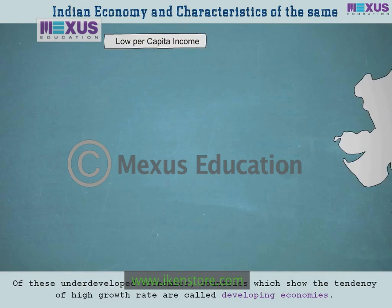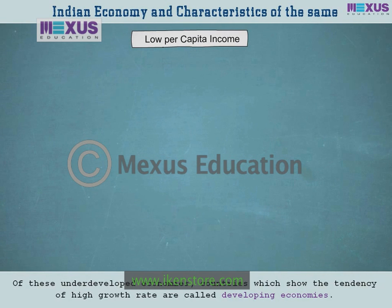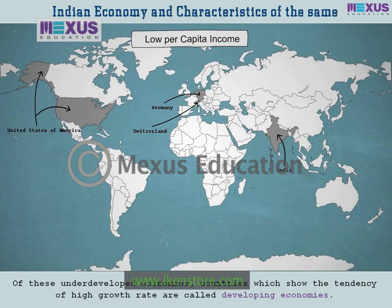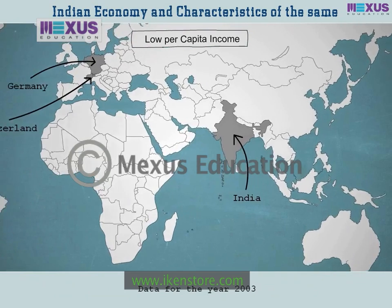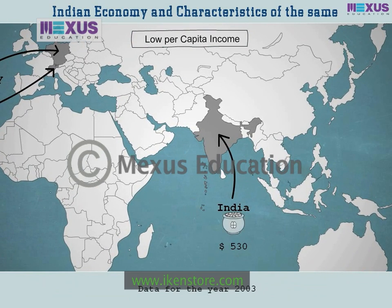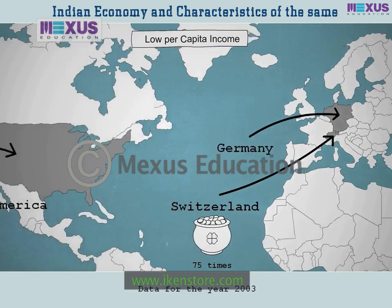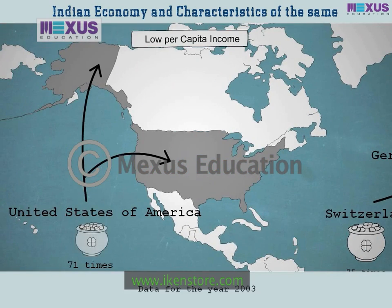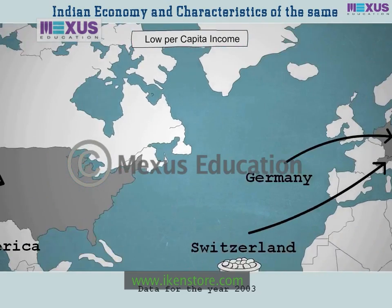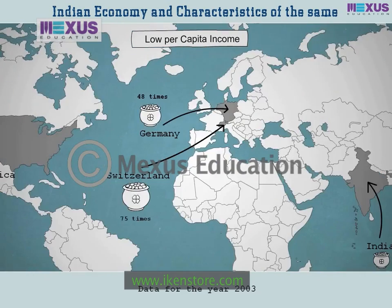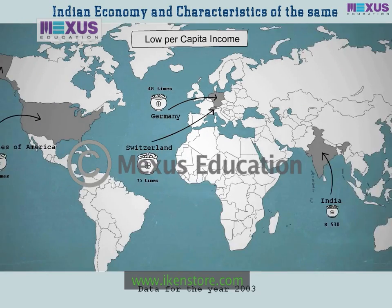Low per capita income. A quick comparison of data for different nations of the world. As per data for the year 2003, per capita income of an Indian was just $530. However, during the same year, per capita income in Switzerland was 75 times, United States of America was 71 times, and that of Germany 48 times more than the per capita income in India.